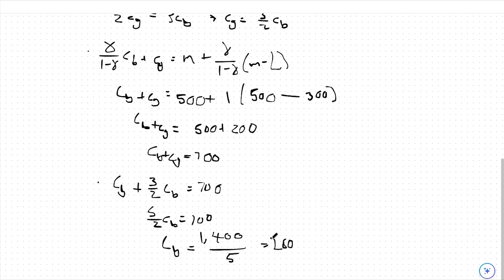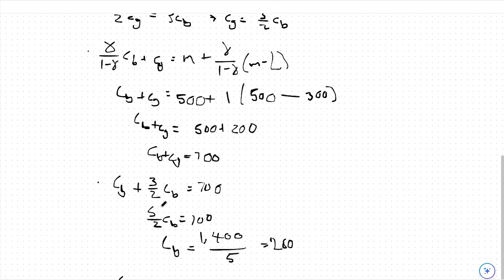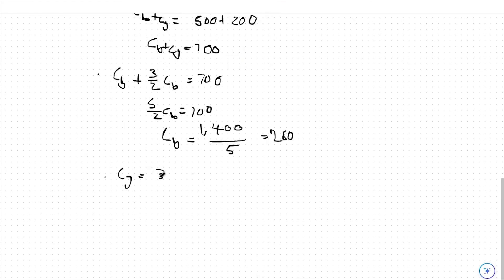If CB is equal to 280, we can also find CG, which will be equal to 3 halves CB, as found here. So I can say CG is equal to 3 halves of 280. So CG is equal to 420. So that would be our answer for CB and CG.